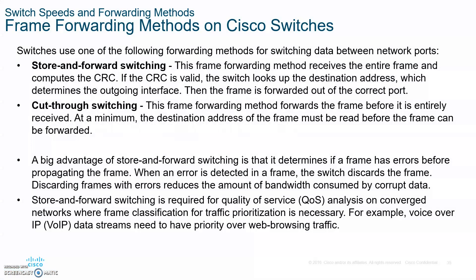There are several types of frame switching. Store-and-forward means when the frame comes in it's stored, we look at it, and then we send it out. Store-and-forward creates latency and delay, but the advantage is error detection — if the frame is corrupted we drop it, if it's not we let it go. Cut-through, on the other hand, just looks at the destination and sends the frame out very quickly with no error detection.